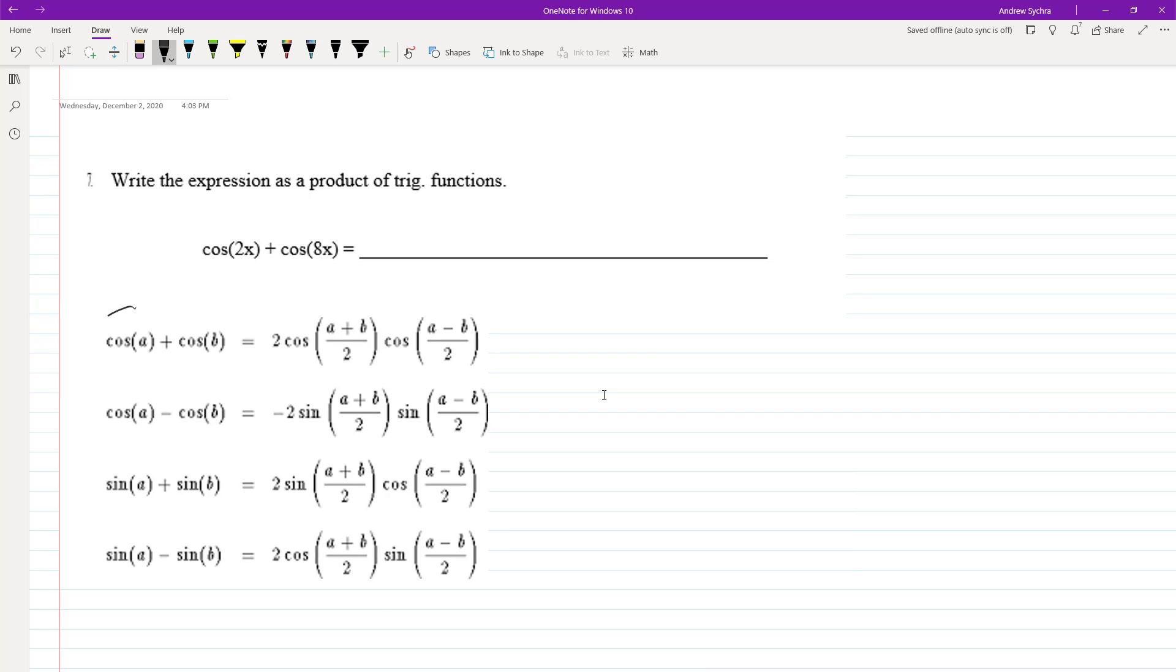It's two cosines added together, so we're going to use this formula right here, and then we can think of the part inside the parentheses as an A and a B component. So we'll have right here cosine, two cosine two X plus eight X divided by two,